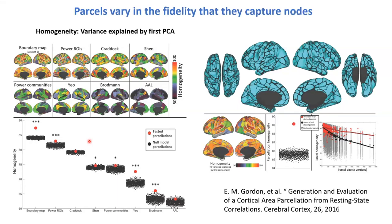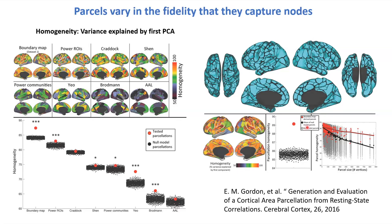This is a comparison of different parcellation methods by Evan Gordon. The point: no matter what method you use, there's a lot of heterogeneity of signal within each parcel. You can divide the brain down to columns and there's probably unique information in each column. The plot of homogeneity versus parcel size shows it goes down to each voxel — the message is: go to as high resolution as possible and smooth as little as possible.